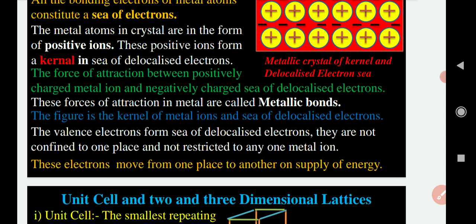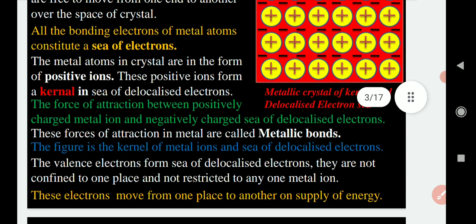As these electrons are mobile and movable, metallic crystals become good conductors of heat and electricity. Metals also have the property of malleability — they can be hammered and pressed to form thin sheets — and ductility — they can be drawn into wires. Examples of metallic solids include copper, Fe, aluminium, calcium, lithium, sodium, gold, cobalt, and others.